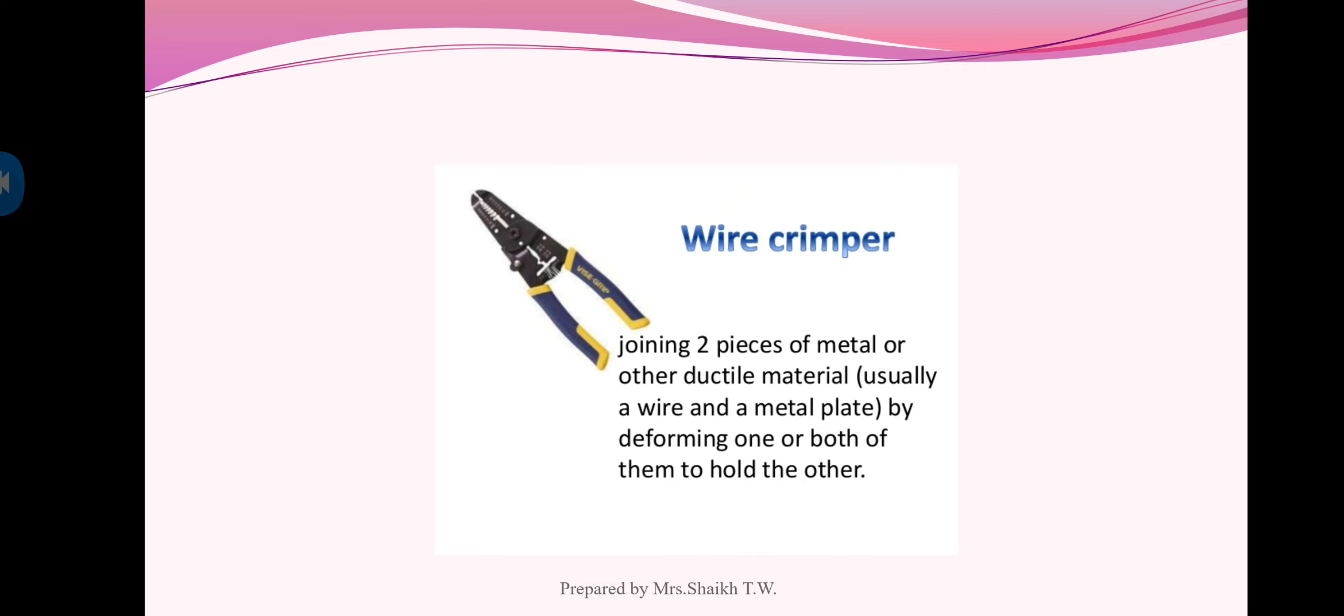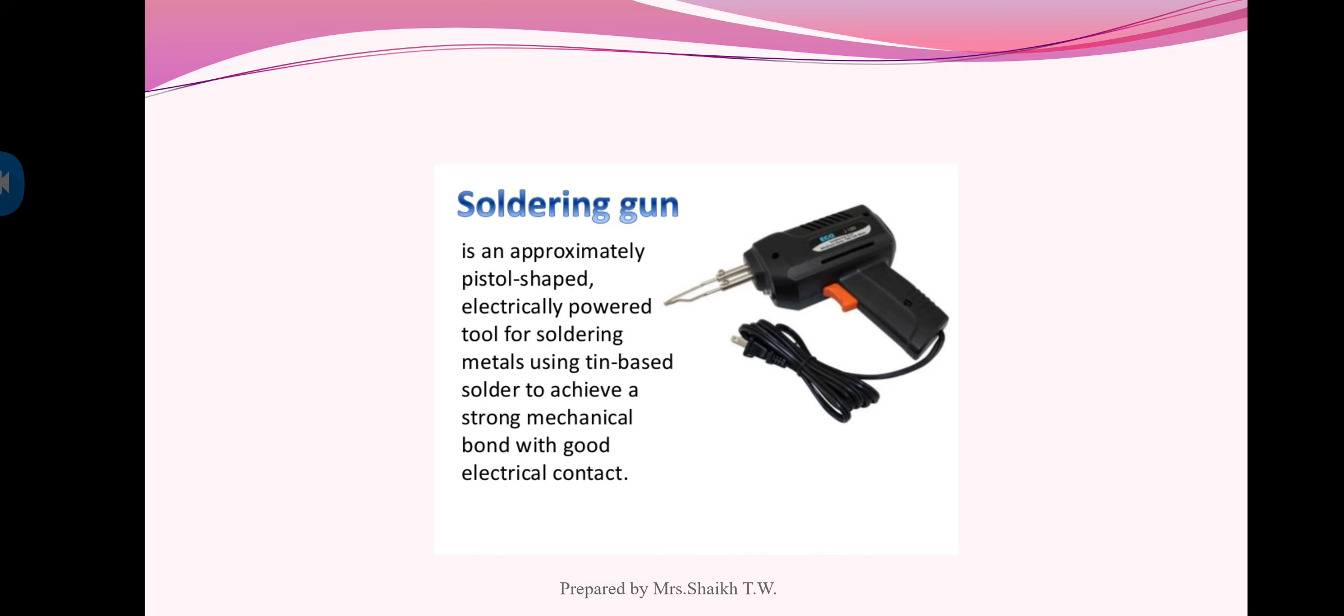Next one is wire crimper. Wire crimper is used for joining two pieces of metal or other ductile material, usually wire and metal plate, by deforming one or both of them to hold the other. Next one is soldering gun used for the soldering purpose.